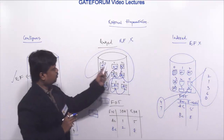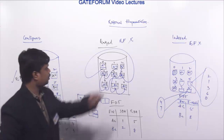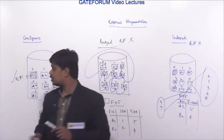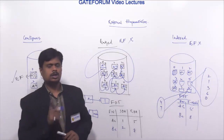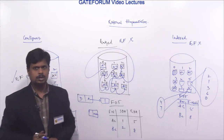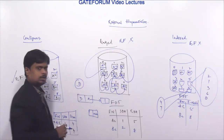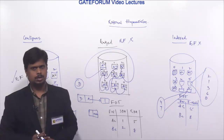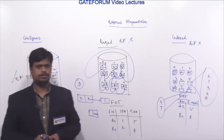So the file allocation techniques without external fragmentation are only linked and indexed. Contiguous allocation has external fragmentation. Hence, the answer is linked and indexed, which matches option D — 2 and 3. The answer for this question is option D.